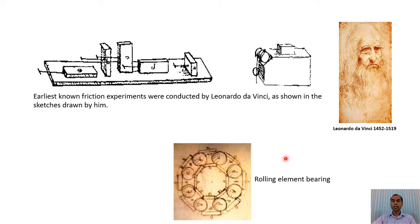With the development of machines, tribological issues became very important. The decline of the chariot for war happened around the first century AD, and one can think about why — was it because of the problems of friction and wear, where the axle and wheels could not withstand those tribological conditions? That may be why people stopped using chariots for war and switched to cavalry or horses alone. These are further questions that emerge from studying the history of tribology.